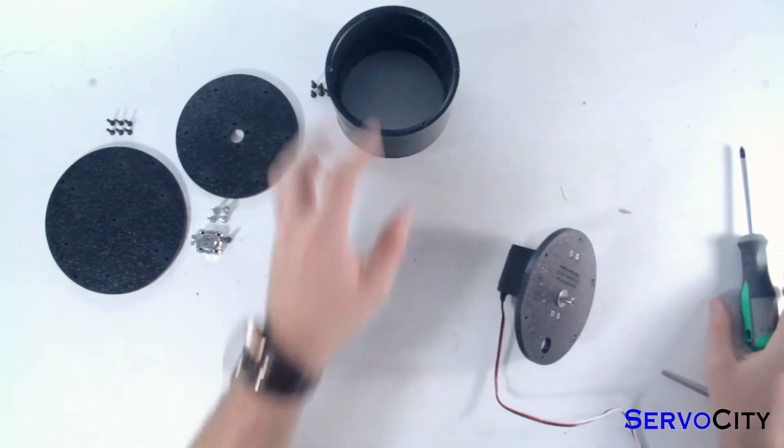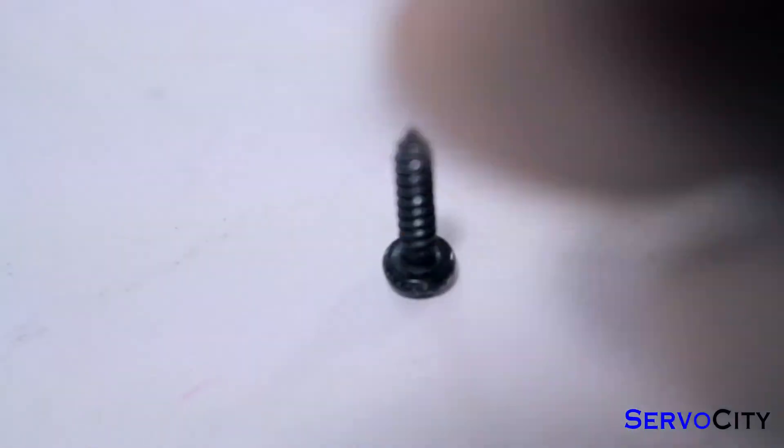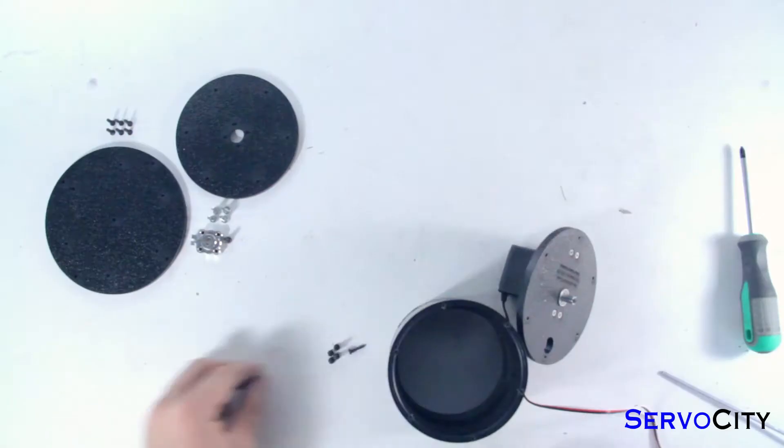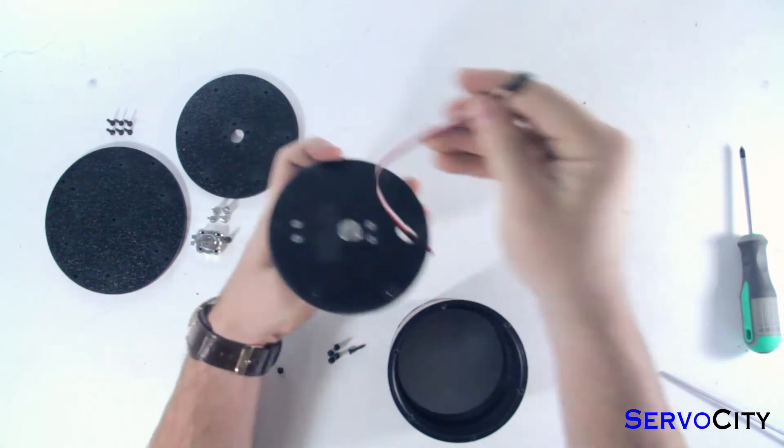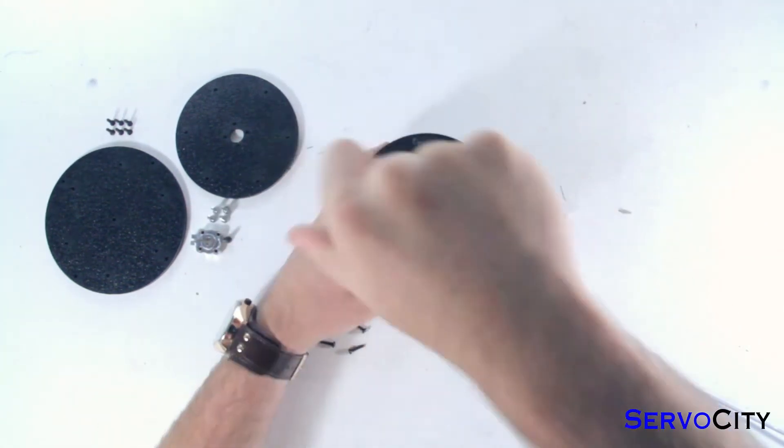Next, grab the cylindrical ABS tube and six 1.5 inch Phillips head screws. Feed the servo wires through the second hole in the ABS plate, and then fasten the plate to the top of the tube using your screws.